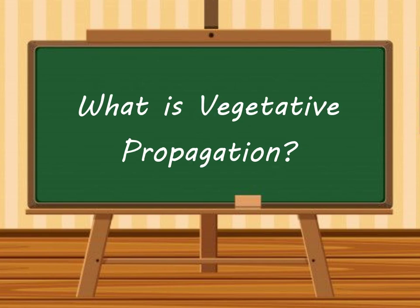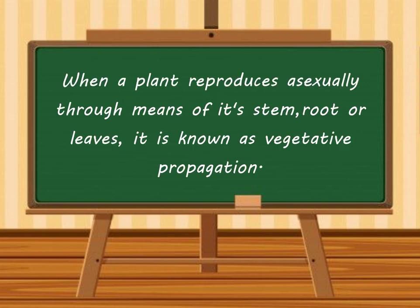First of all, what is vegetative propagation? When a plant reproduces asexually through means of its stem, root or leaves, it is known as vegetative propagation.